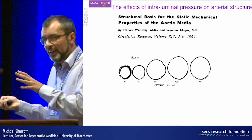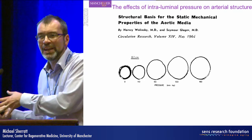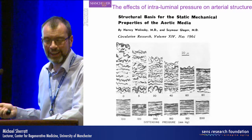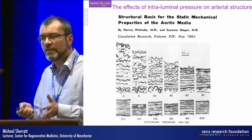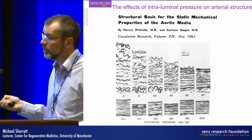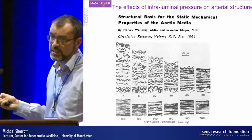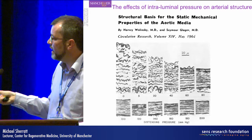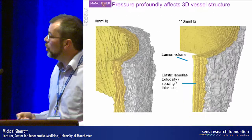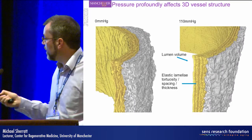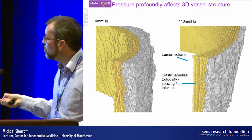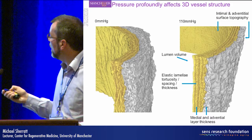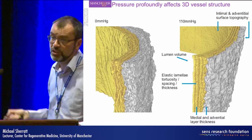Importantly, this is an unpressurized vessel, a state that only occurs when the animal is dead. Going back to 1964, Wolinsky and Glagov pressurized the rabbit aorta and demonstrated an increase in lumen diameter, a decrease in the waviness of the elastic lamellae, and a decrease in medial layer thickness. We can now show this in three dimensions — the very straight elastic lamellae under pressure — and crucially, we can preserve the adventitia and measure differences between the two layers, as well as examine the topography of the intimal and adventitial surfaces.